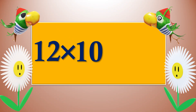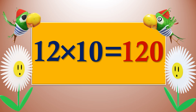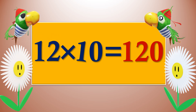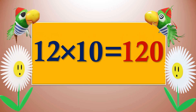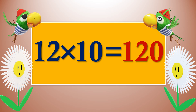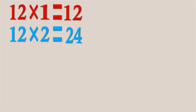Twelve tens are one hundred and twenty. Now let's recap: twelve ones are twelve, twelve twos are twenty-four.